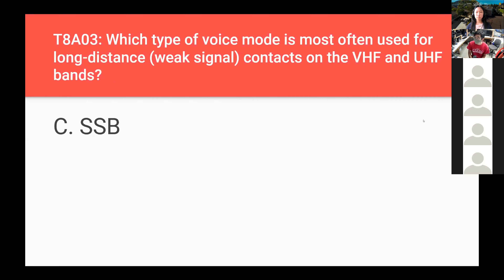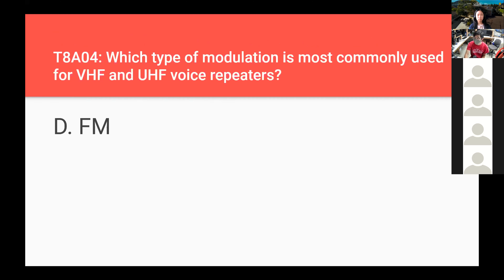Which type of voice mode is most often used for long distance, weak signal contacts on the VHF and UHF bands? SSB — single sideband. Which type of modulation is most commonly used for VHF and UHF voice repeaters? FM — frequency modulation.